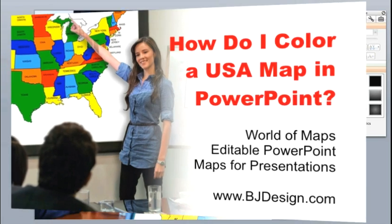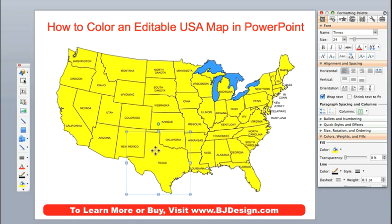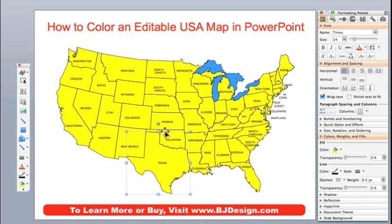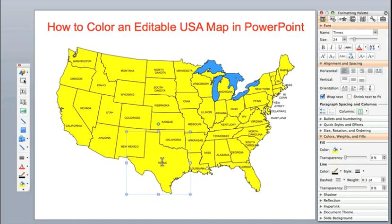Today we're going to be working with one of our USA maps and this is a completely editable map. Every element on here is individual and what that means is that I can click on it with my pointer. You can tell something is selected because you'll see those eight handles on the outside, and this can be pulled out to individual objects that can be customized and changed.